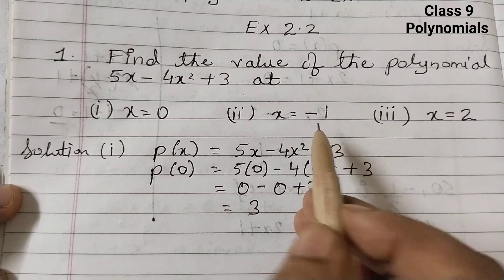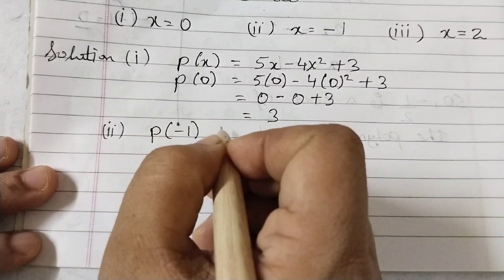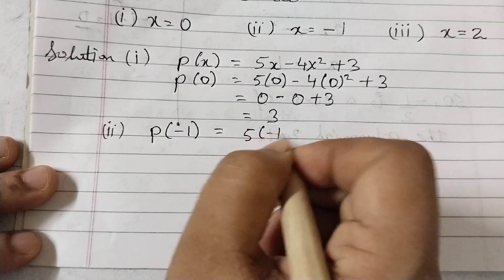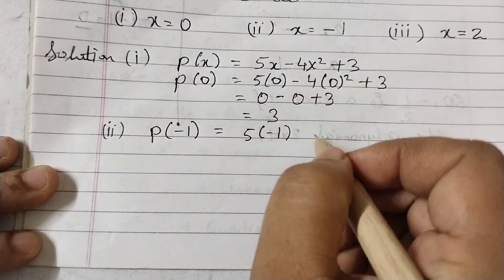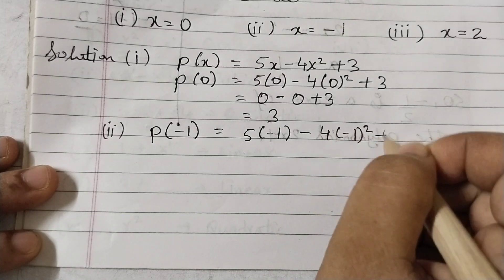Next, x equals minus 1. p of minus 1. So 5 into minus 1 minus 4 times minus 1 squared plus 3.